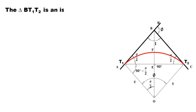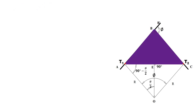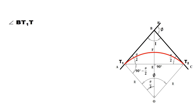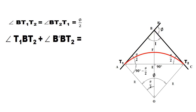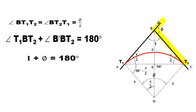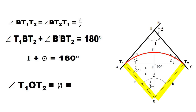The triangle BT1T2 is an isosceles triangle, and therefore the angle BT1T2 is equal to the angle BT2T1, which equals φ/2. The summation of angle T1BT2 plus angle B'BT2 is equal to 180 degrees. So the angle of intersection plus the deflection angle equals 180 degrees. The angle T1OT2 is equal to φ, that is 180 degrees minus the intersection angle.